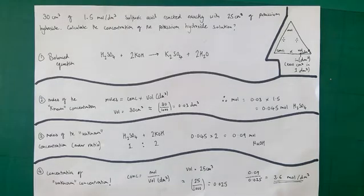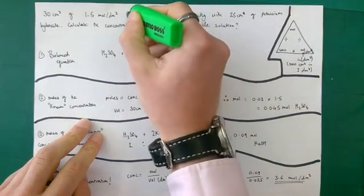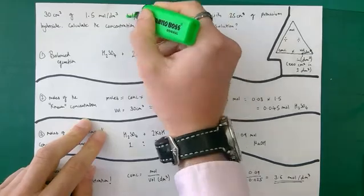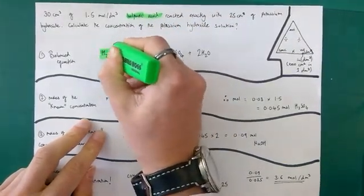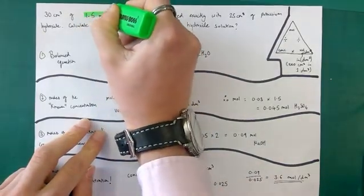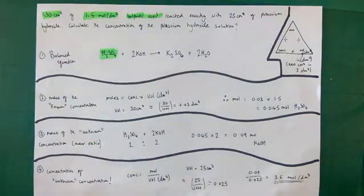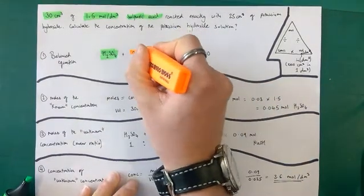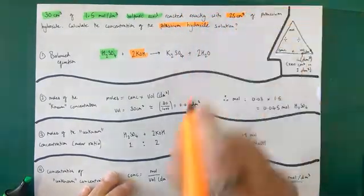The important thing is to spot which substance you know the most information about. For sulfuric acid you have two pieces of information: a concentration and a volume. Whereas for potassium hydroxide you only have one piece of information — a volume. So you start with the one you know most about, which is the sulfuric acid.